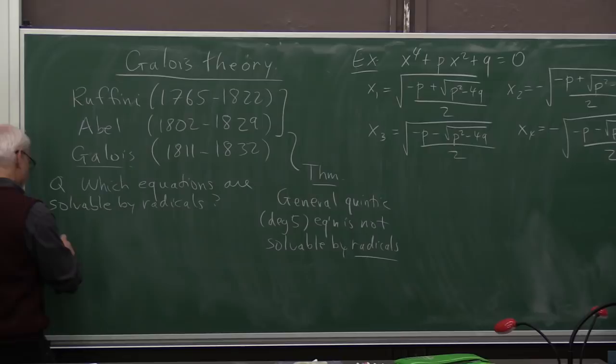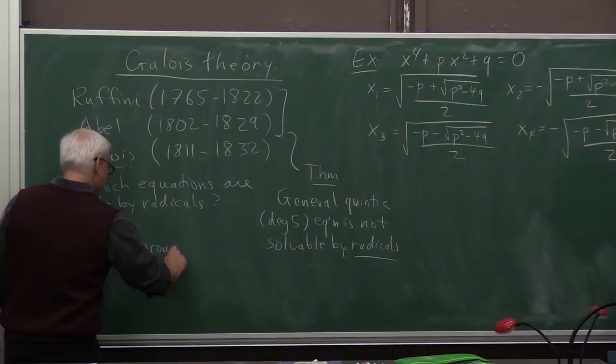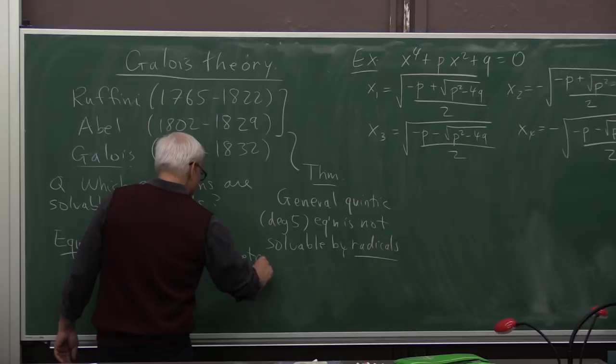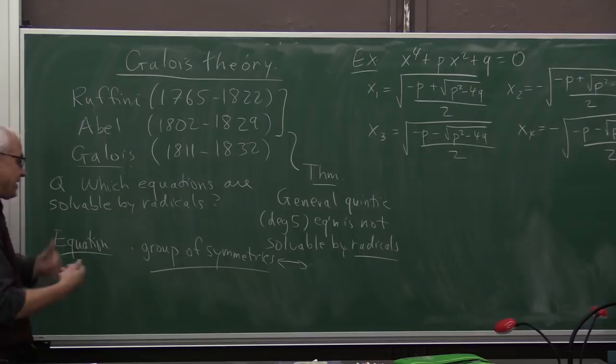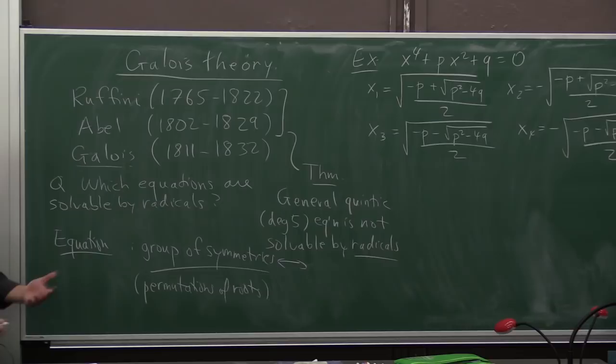And his idea is that if you have an equation, say a degree five or a degree higher or whatever, then you could associate to that a group of symmetries. He's following Lagrange here. But he introduced a group of symmetries, basically permutations of roots. It's the same kind of thing that Lagrange was looking at.